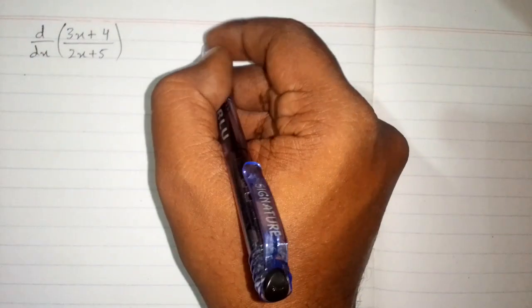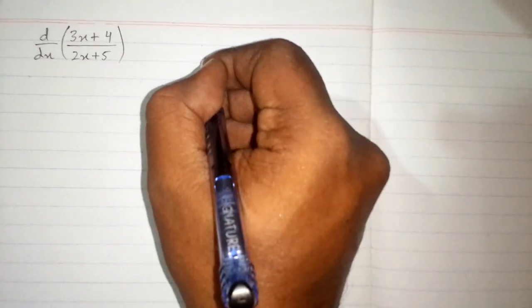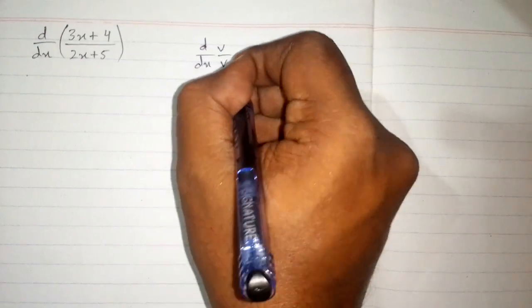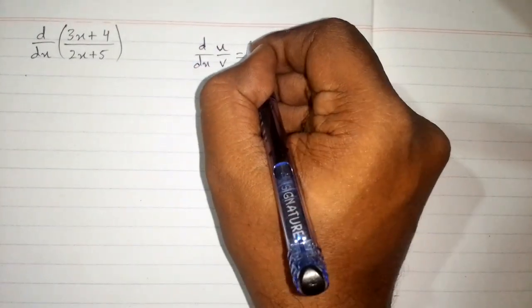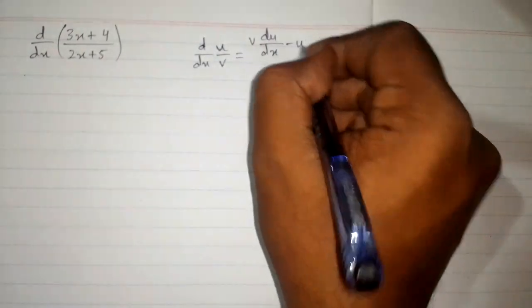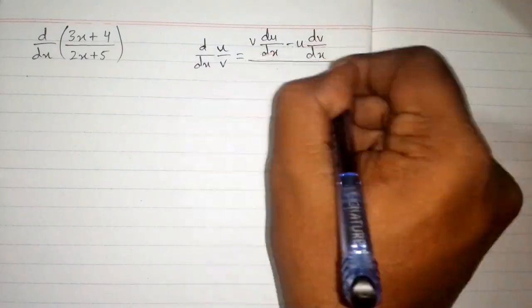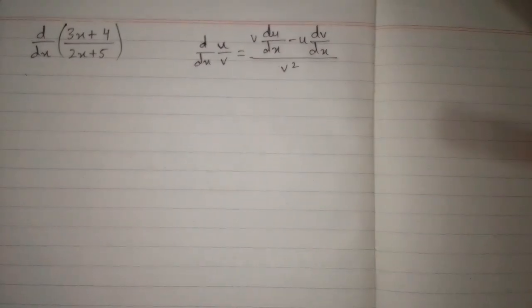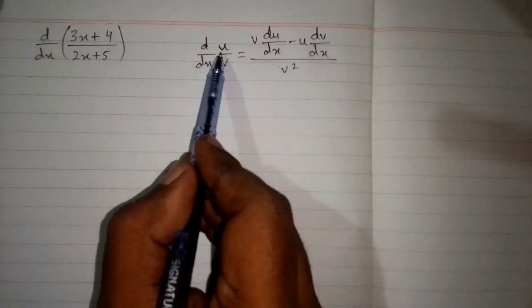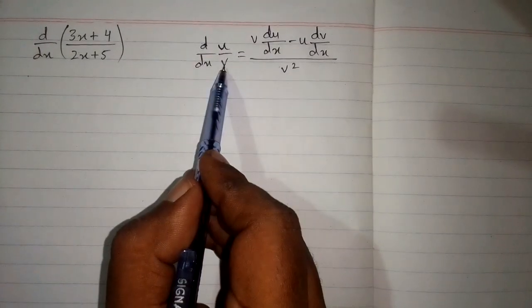In this video we will take the derivative of (3x + 4) upon (2x + 5). So here we have a fraction, so we will apply the quotient rule of differentiation, which is d/dx of u upon v equals v into derivative of u minus u into derivative of v upon v squared. Here we can see that we have 3x + 4 in place of u and 2x + 5 in place of v.